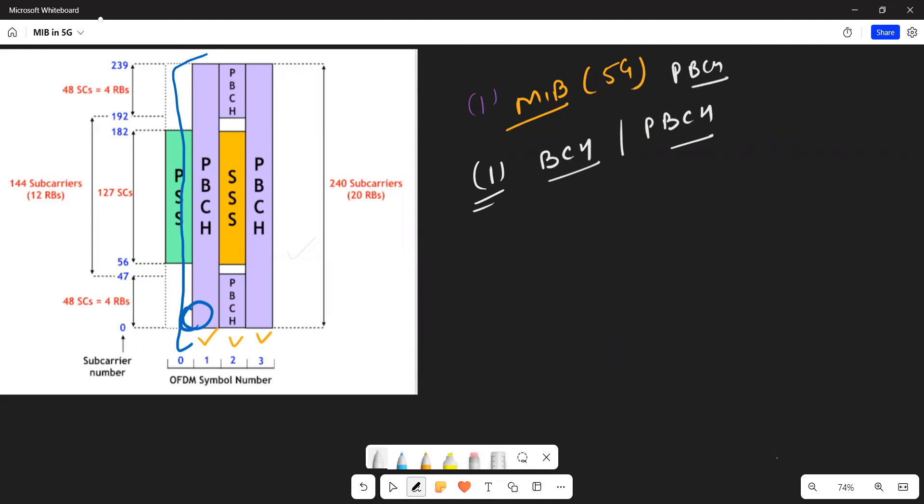If you see the SS block diagram here, I'll remove the unnecessary things. Now it's clear. If you see this diagram, where do we have exactly this MIB or PBCH? At first OFDM symbol, second OFDM symbol, and third. It's kind of distributed here.